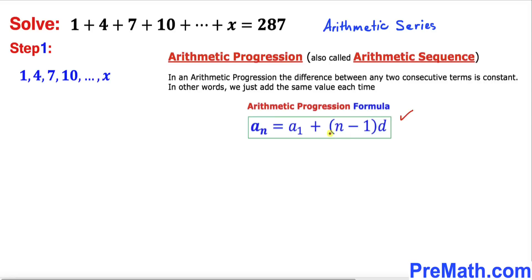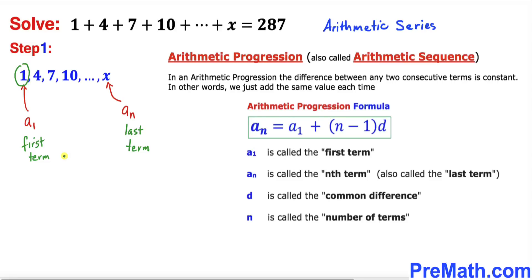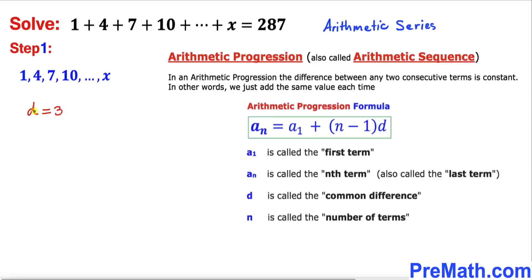Here's the arithmetic sequence formula we will be using: a sub n equals a sub 1 plus n minus 1 times d, where a sub 1 is the very first term, a sub n is the last term, d is the common difference, and n is the total number of terms. In our case, 1 is the first term (a sub 1), x is the last term (a sub n), and d equals 3.